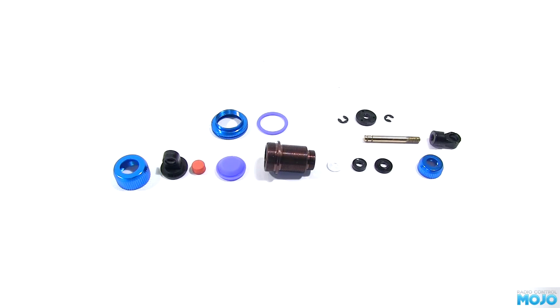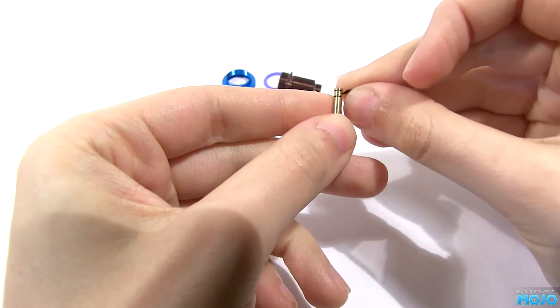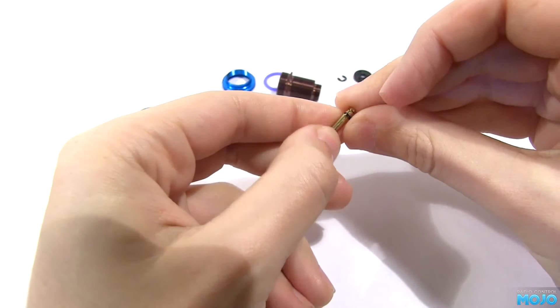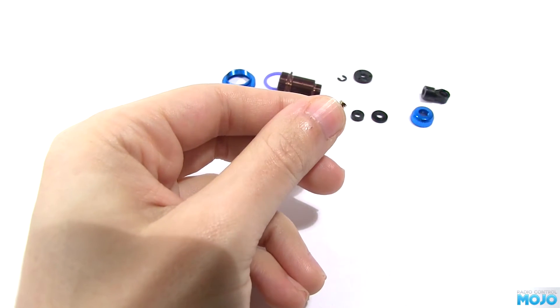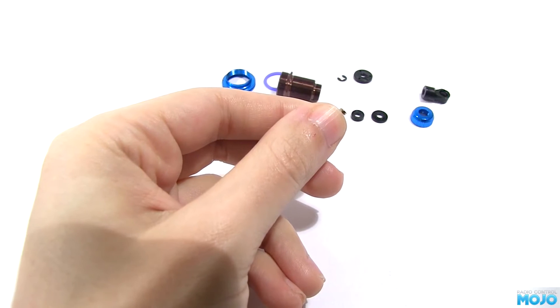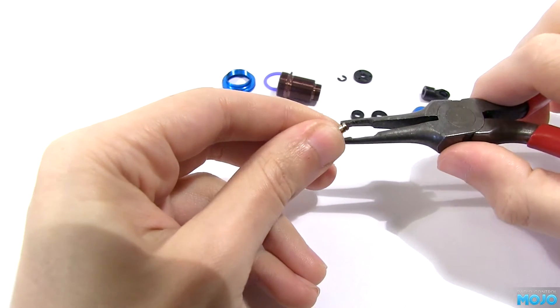Grab the shaft and pop in one of the E-clips, sorry E-rings into the lower slot. You can do this operation with the shaft in a bag if you're worried about losing one, as the kit doesn't come with any spares.